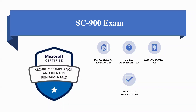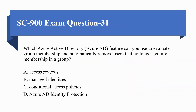Hello everyone, welcome to my YouTube channel. This is the fourth video of the SC-900 example series. Moving towards question number 31: which Azure Active Directory feature can you choose to evaluate group membership and automatically remove users that no longer require membership in a group?